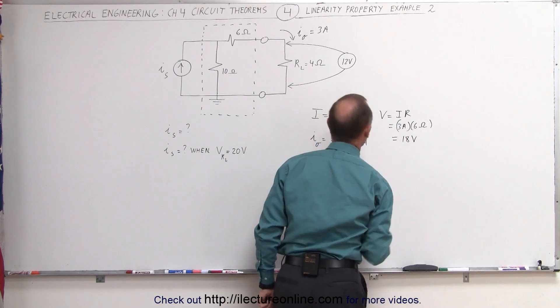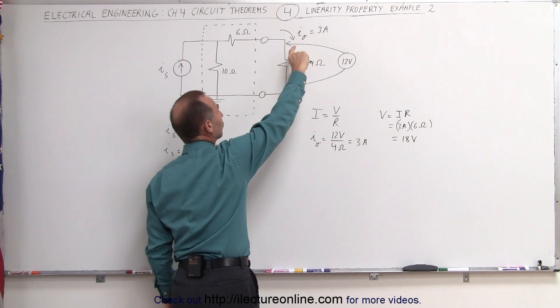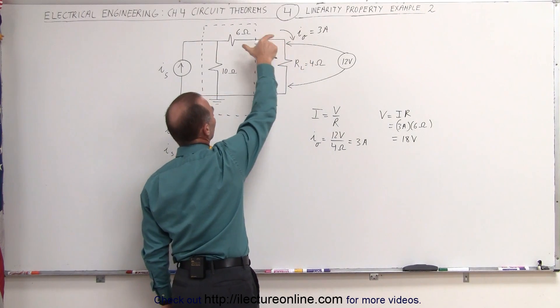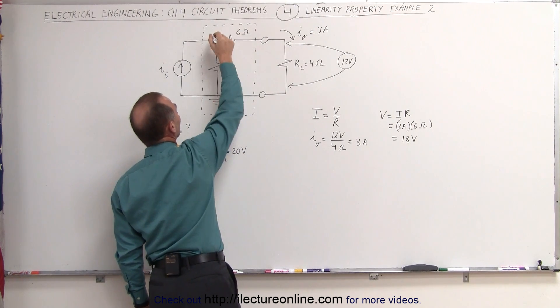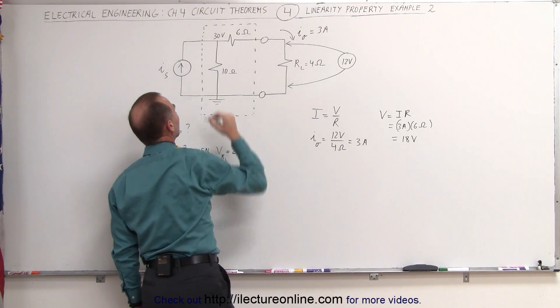That's equal to 18 volts, which means we have a 12 volt drop across this resistor, an 18 volt drop across this resistor, which means that between this node and ground, we must have a 30 volt potential difference.